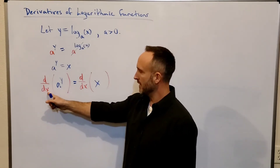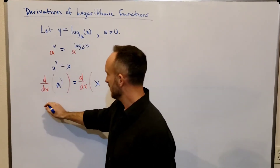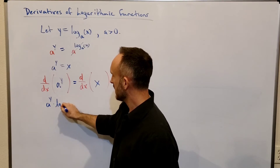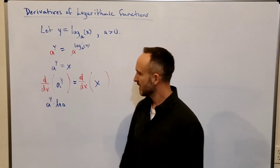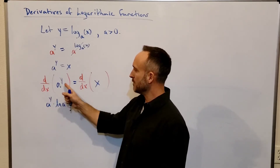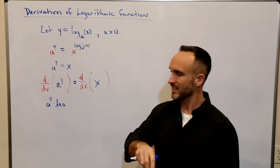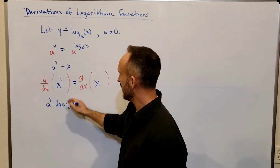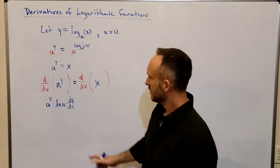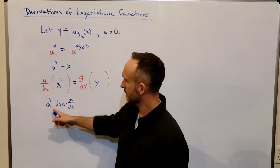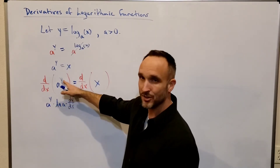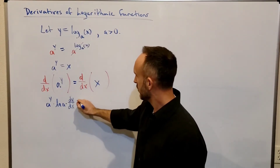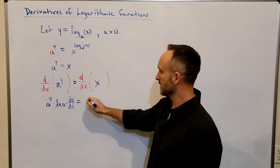The derivative of a to the y power is a to the y multiplied by the natural log of a. And because y is a function of x, we apply the chain rule and also multiply by dy/dx. So a to the y times natural log of a is the derivative of the outer function, and dy/dx is the derivative of the inner function. The right side is simply 1.